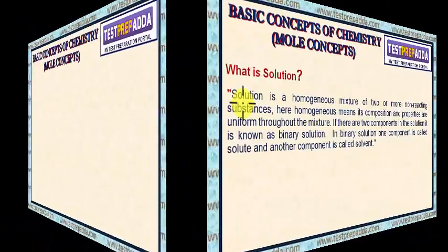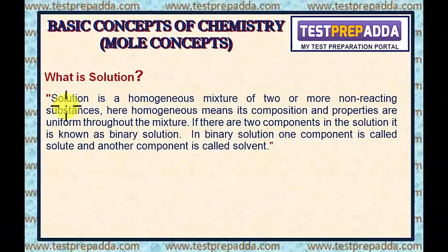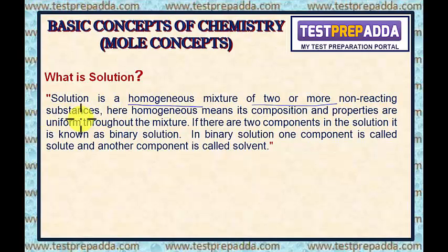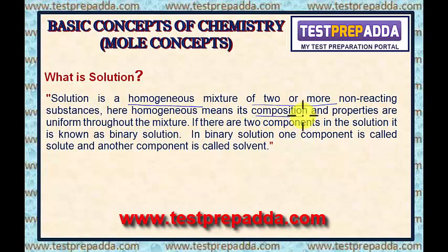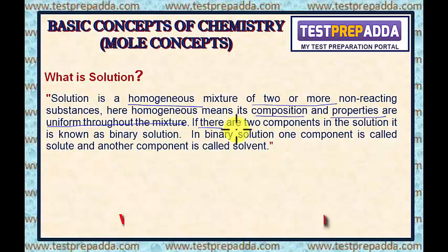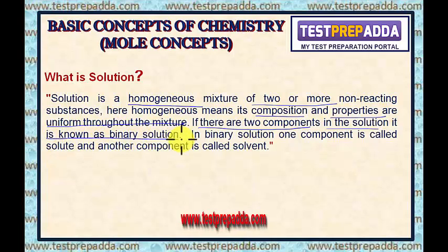What is solution? Solution is a homogeneous mixture of two or more non-reacting substances. The meaning of homogeneous is that the composition and properties are uniform throughout the mixture. If there are two components in the solution, it is known as binary solution.